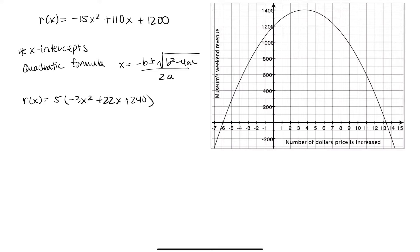So this tells me that a is equal to negative 3, b is equal to 22, and c is equal to 240.